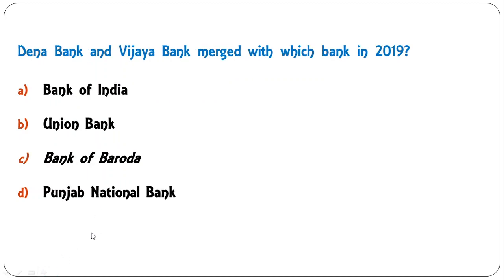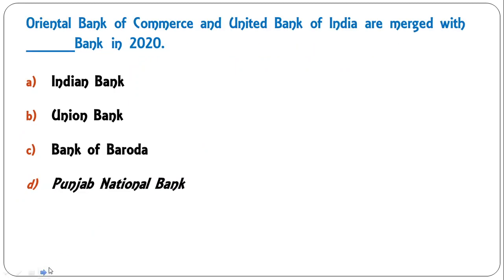Dena Bank and Vijaya Bank merged with which bank in 2019? Options are Bank of India, Union Bank, Bank of Baroda, or Punjab National Bank. The correct answer is C — Bank of Baroda. Dena Bank and Vijaya Bank merged with Bank of Baroda.